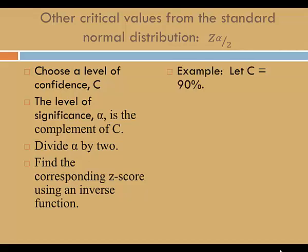Let's look at an example. Let c equal 90%. Then alpha is the complement of c. 1 minus 90% is 10%.